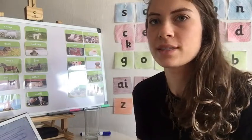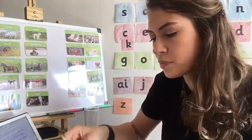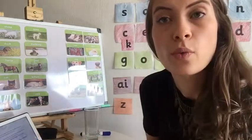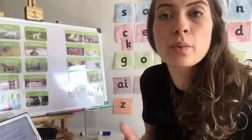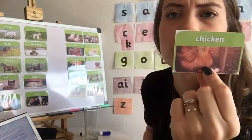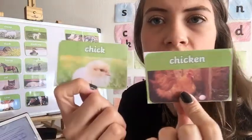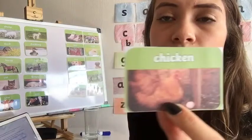Hey everyone, welcome to the second science video and the last video for this Monday. So we know that animals — and not just animals, it happened with us too — we change as we grow. For example, I have here the chicken, which is the adult, and then the chick, its offspring. If we compare, they are a bit different but also similar, because of course this chick is going to grow up and become a chicken.